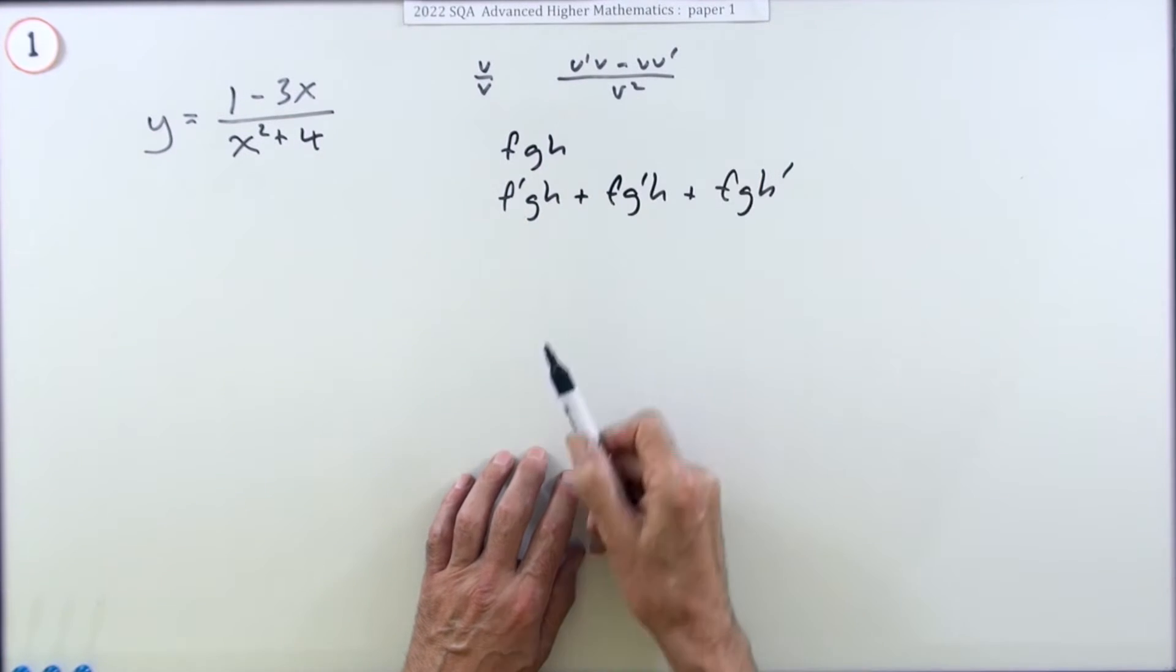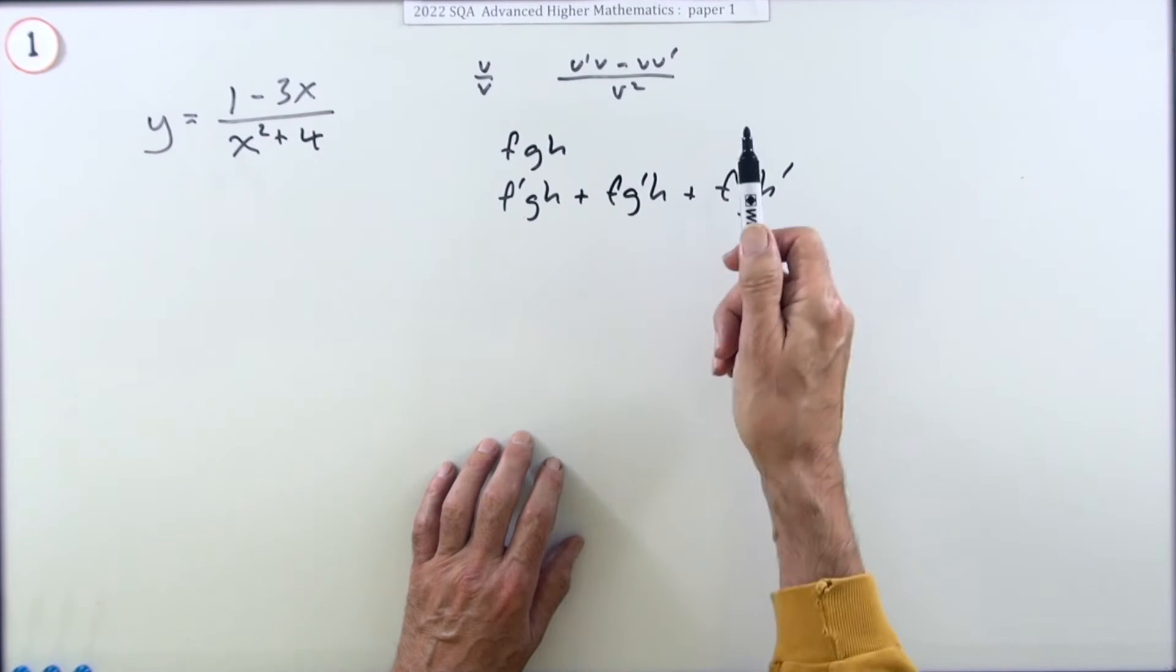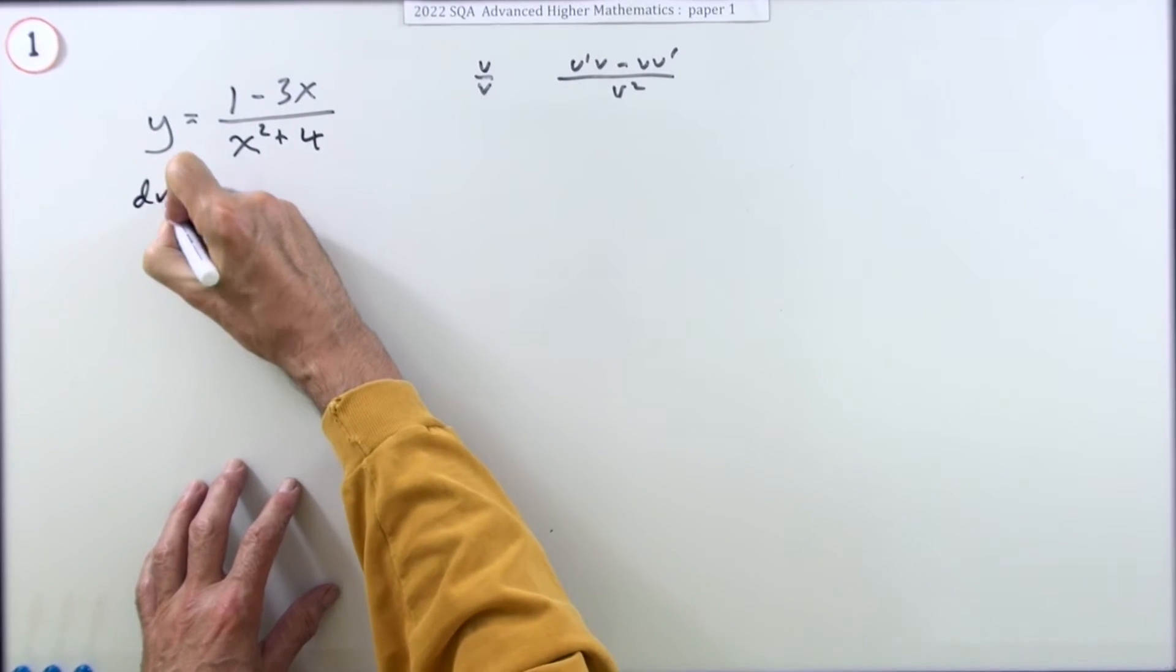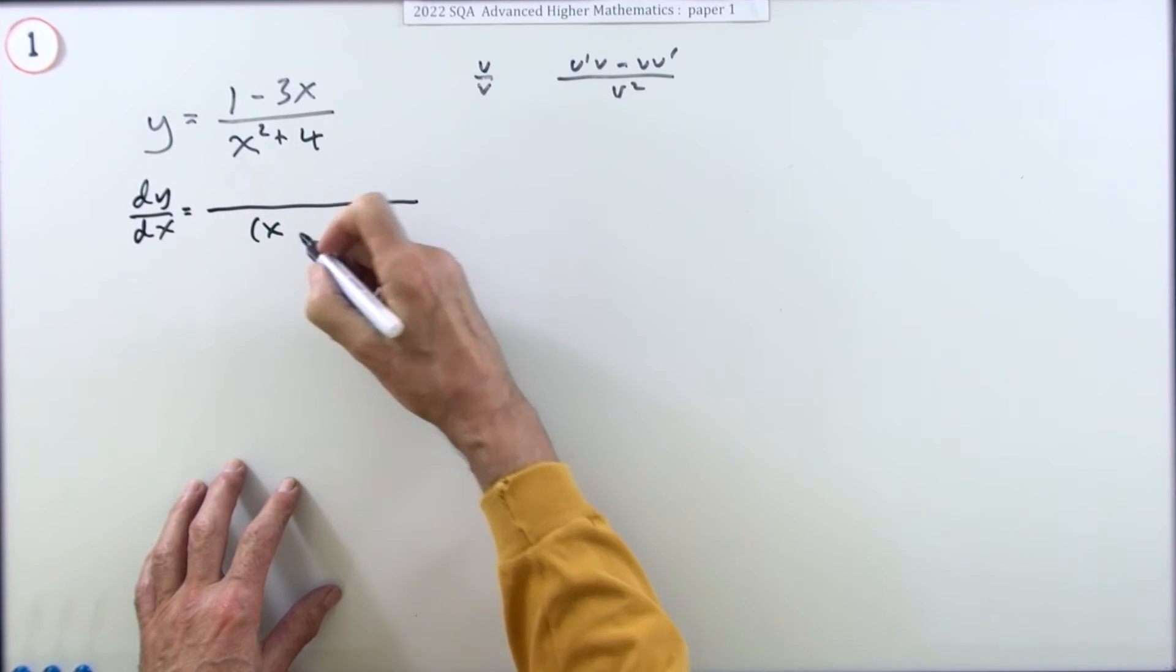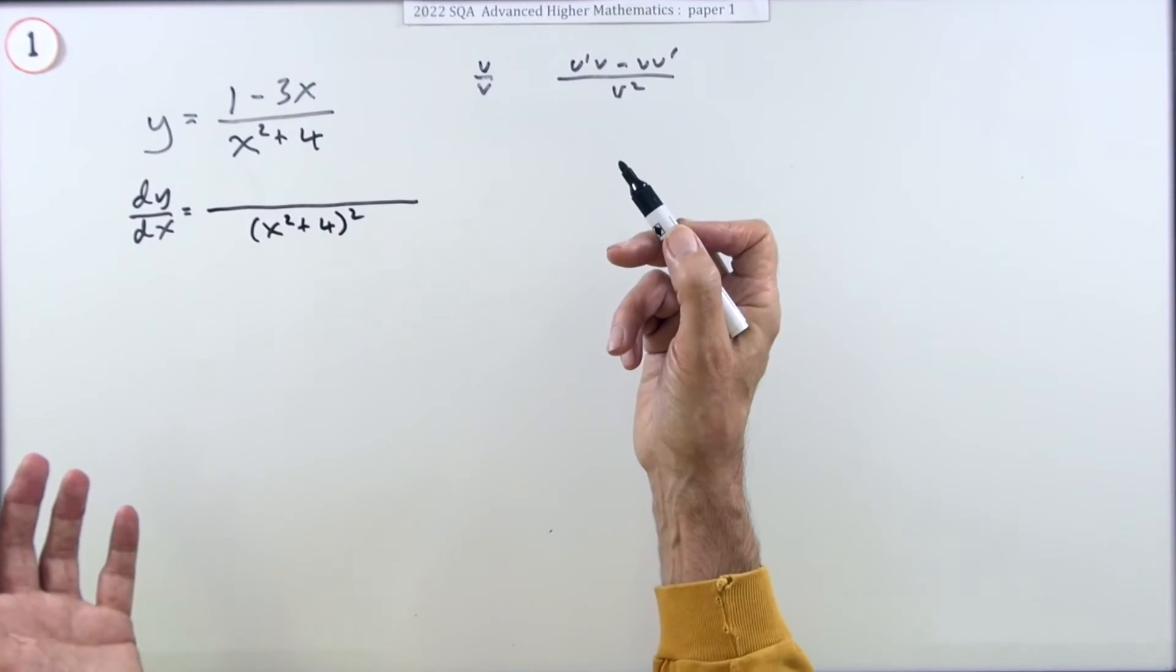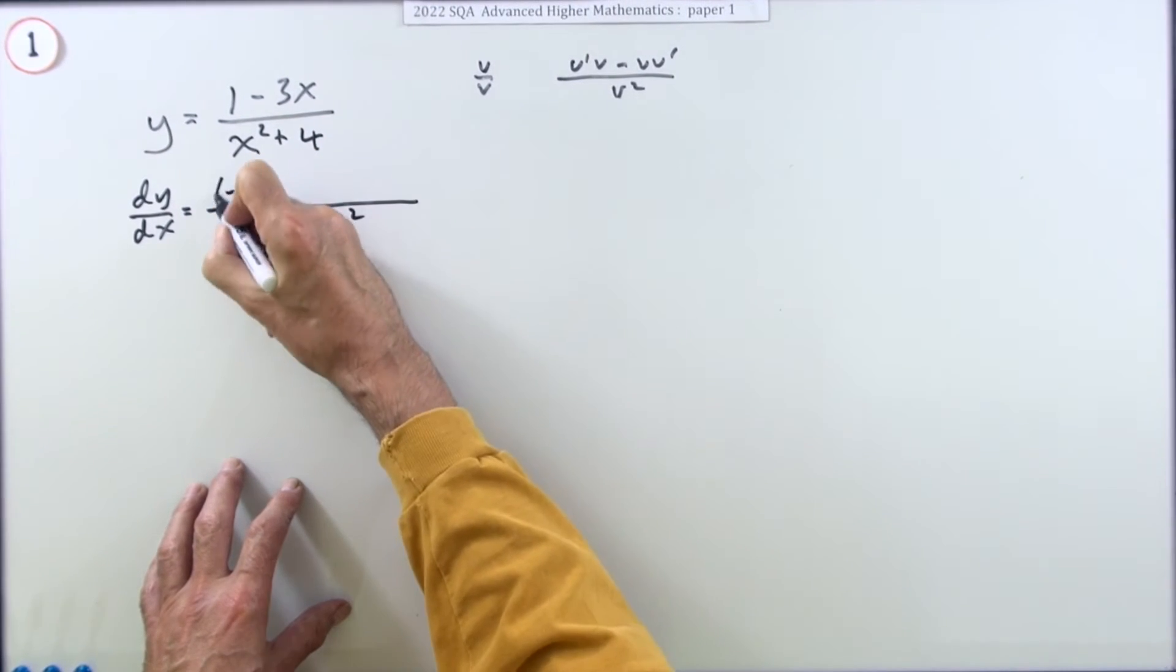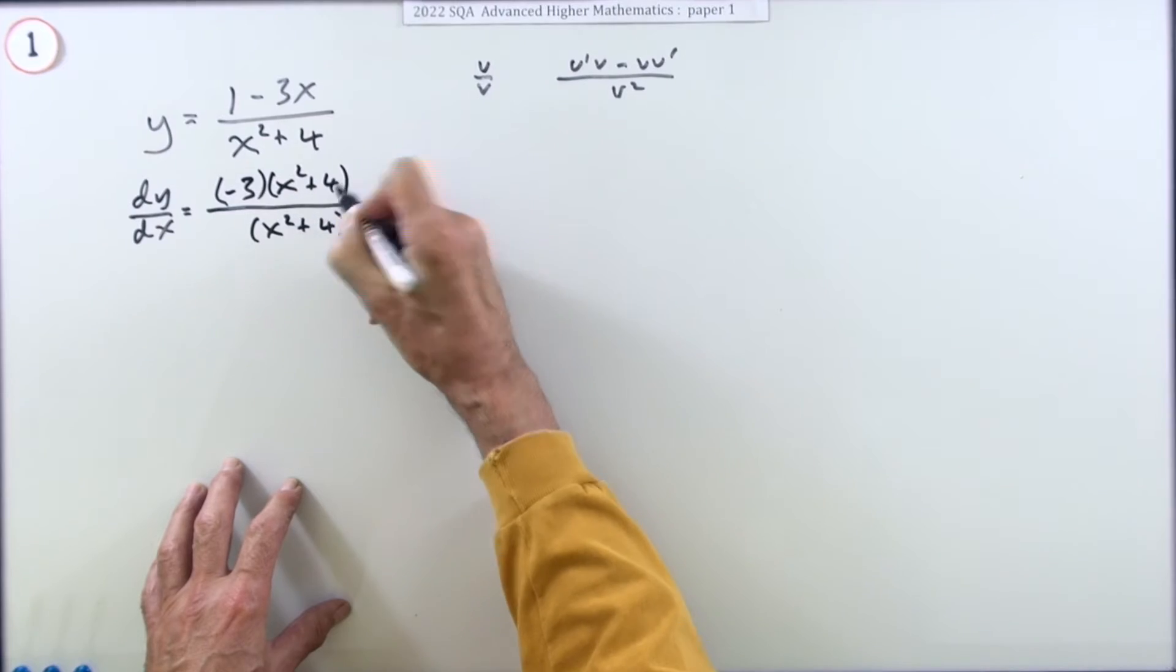So when you write down that pattern you might have them in a different order, it makes no difference. So dy/dx, the pattern is you square the denominator, then they take their turn. You can do them in any order, it's all commutative. I'll start with the top one first, so differentiate the top, that's just negative 3, multiply that by x squared plus 4, minus. Differentiate the bottom, 2x.